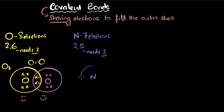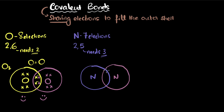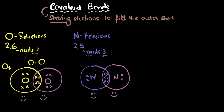Let's draw the dot structure for nitrogen. Here is one nitrogen atom, and here is the second nitrogen atom. The three electrons it wants to share we draw in the middle. The remaining two electrons from the outer shell we can draw on the side. Remember, we only show the electrons in the outer shell in this diagram. The same is done for the second nitrogen — it shares three electrons in the middle, and the remaining two are drawn on its side. Counting the electrons for the first nitrogen: one, two, three, four, five, six, seven, eight — it's happy. The same is true for the second nitrogen; it has a fully filled outer shell.